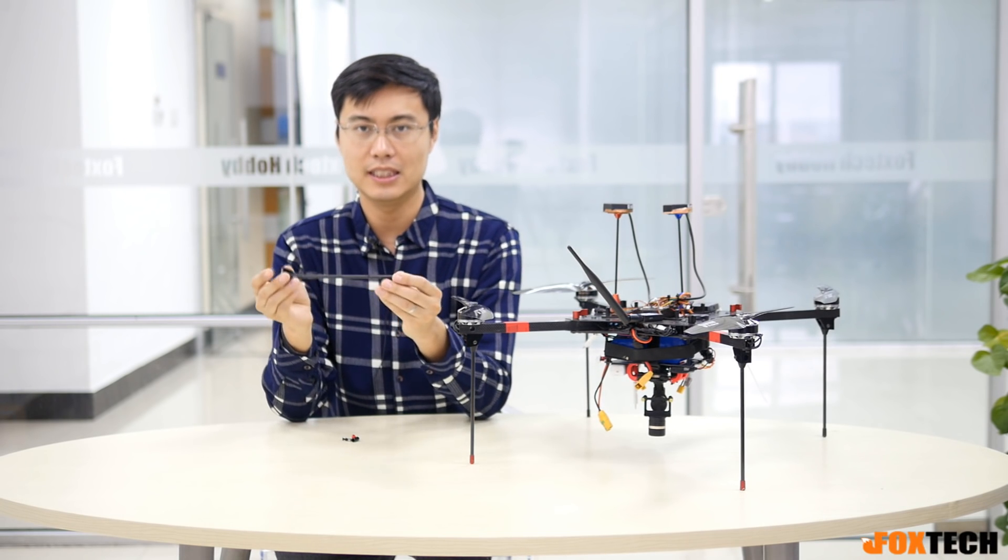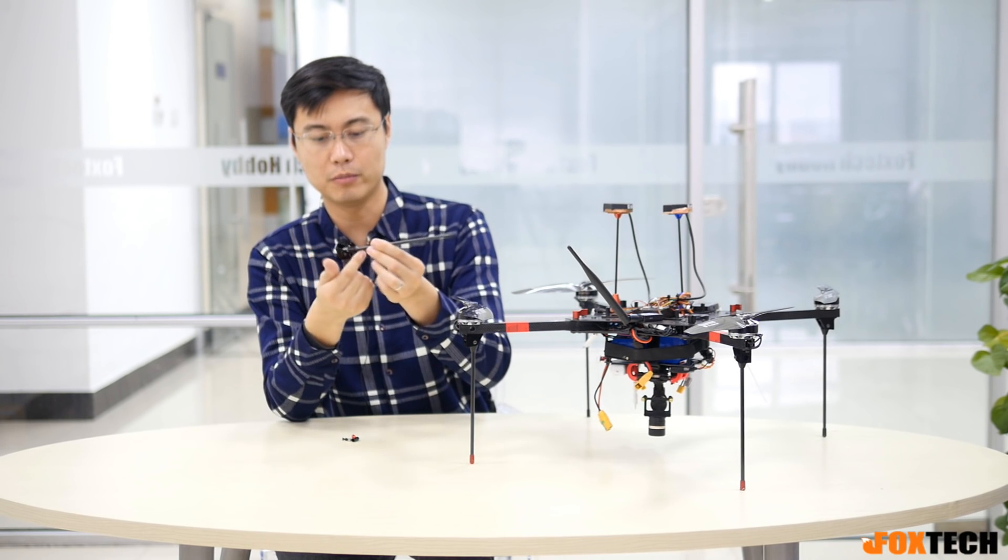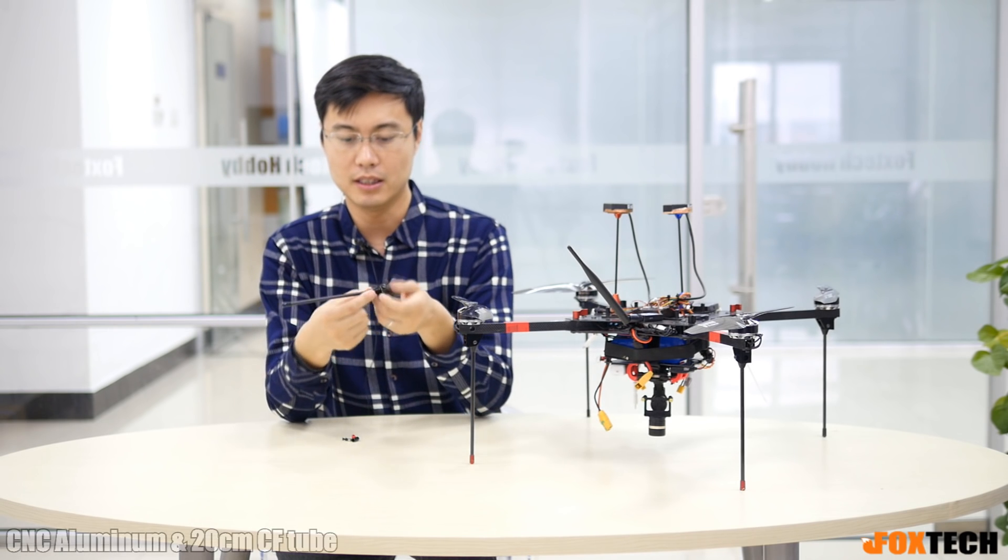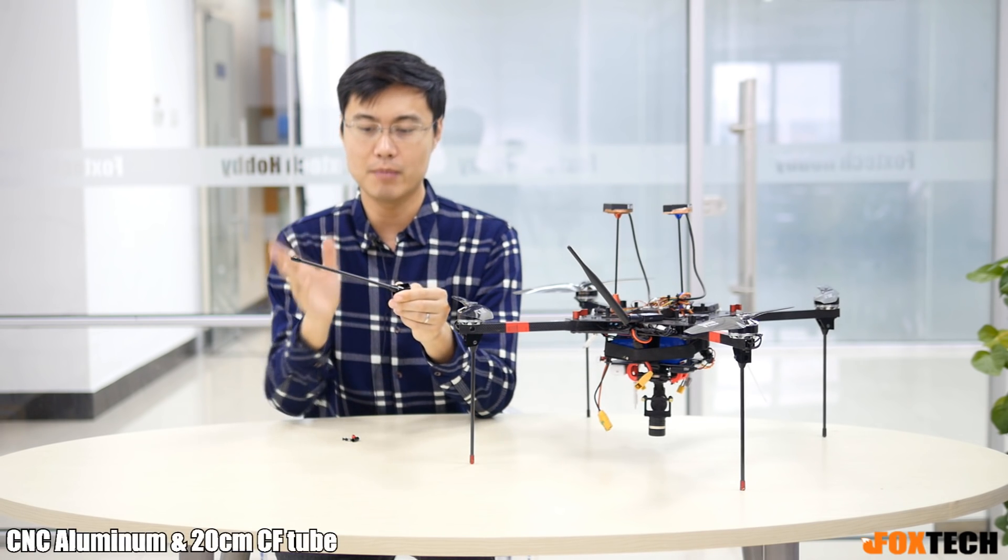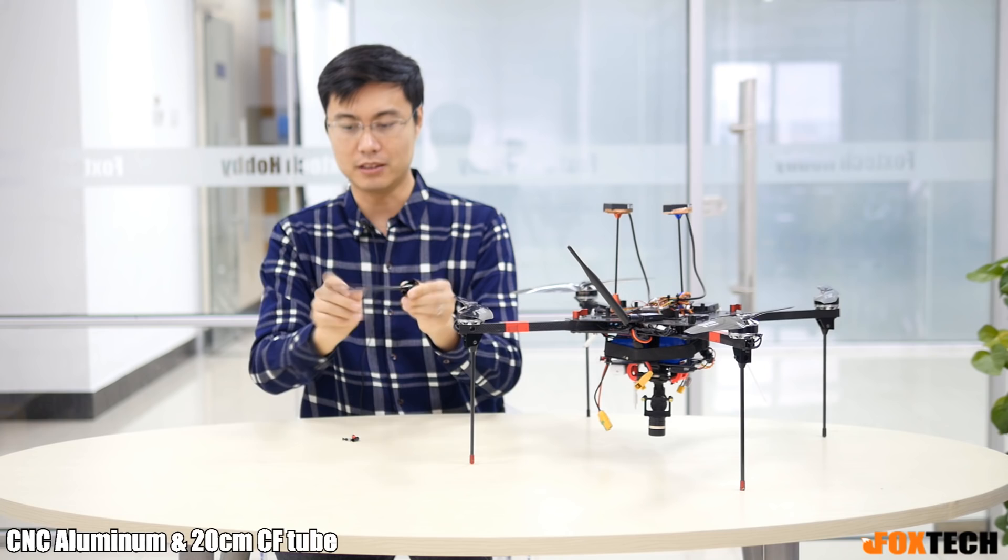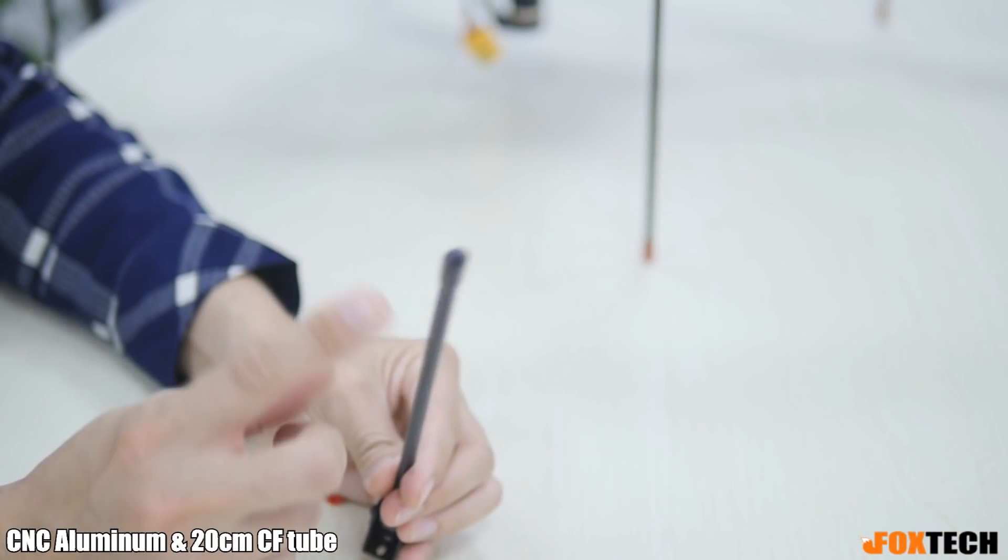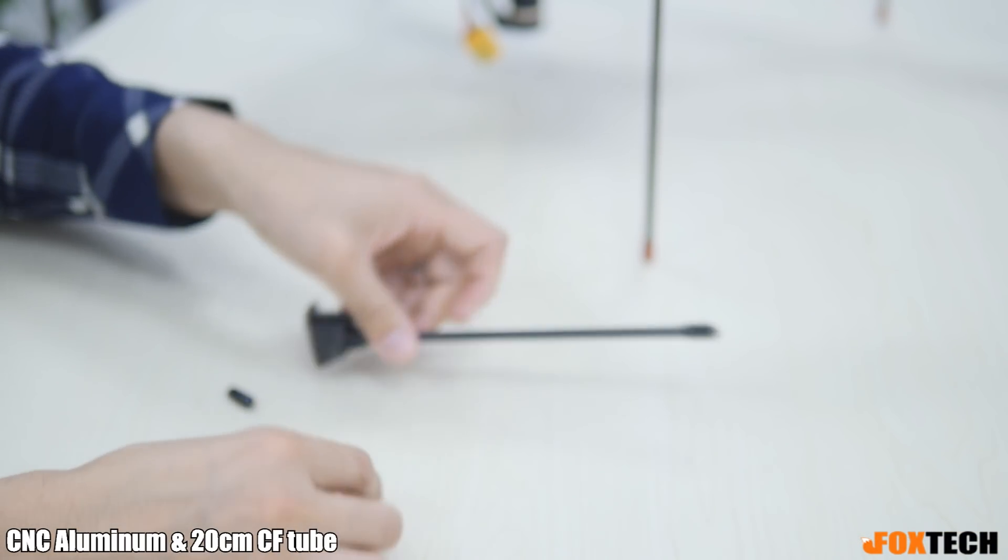Okay, this easy landing gear comes with the aluminum part and 20 centimeter long carbon fiber tube right here, and a rubber end to protect the carbon fiber tube during landing.